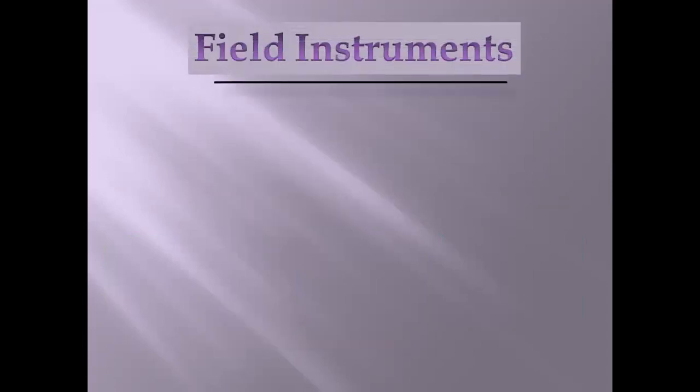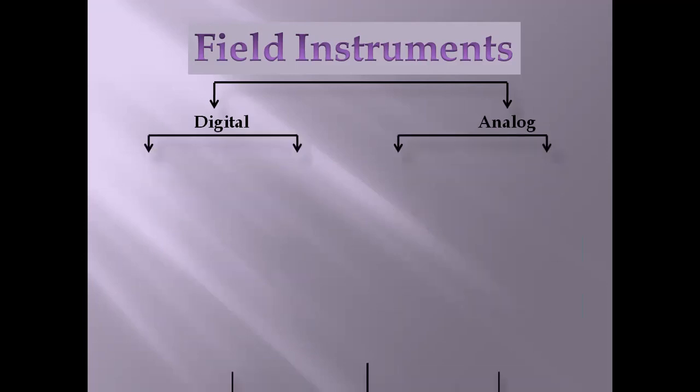Field instruments are of two types: digital and analog. Digital means on and off — one means on, zero means off, only two states. Whereas for analog, it is a variable signal, also known as a continuous signal, which increases or decreases. These are again divided into digital inputs, digital outputs, analog inputs, and analog outputs.